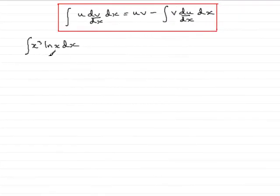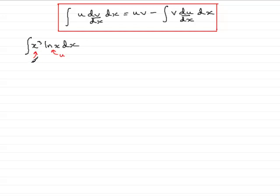When you have integrals that involve natural logs and you're going to use integration by parts, always make sure that the natural log part is your u. The other part then becomes the dv/dx part.